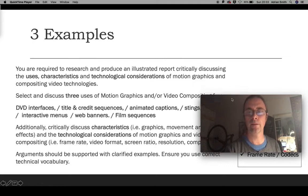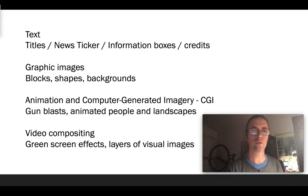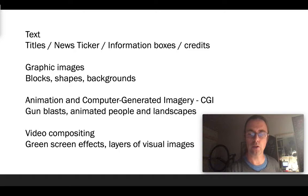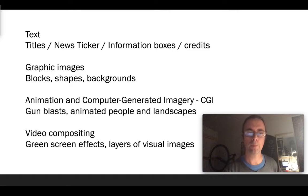Here are some examples of motion graphics types. Text can include information boxes, credits, or a title that comes across the screen. Graphic images might be pictures, shapes, backgrounds, animated computer-generated images — things like gun blasts or special effects in a film. Green screen involves layering up visuals, which is what video compositing means. You can find examples of green screen scenes quite easily on YouTube — Marvel films being explained, and all sorts of different films where they show how certain scenes have been made.